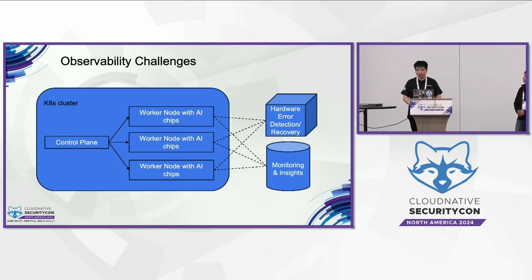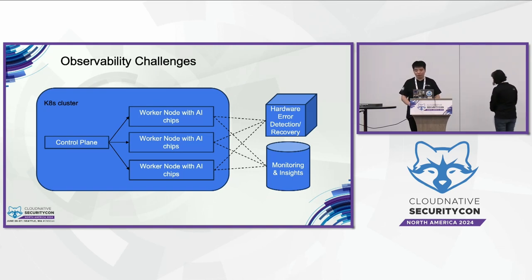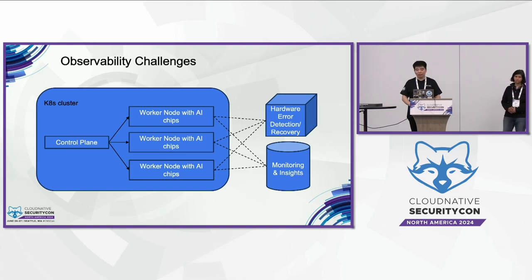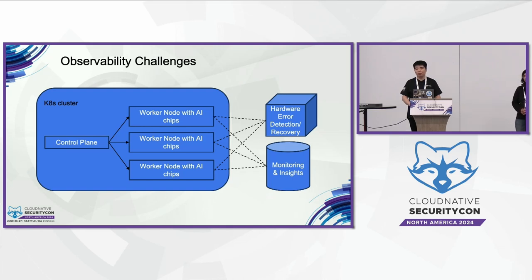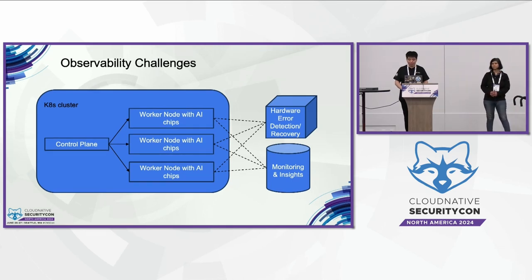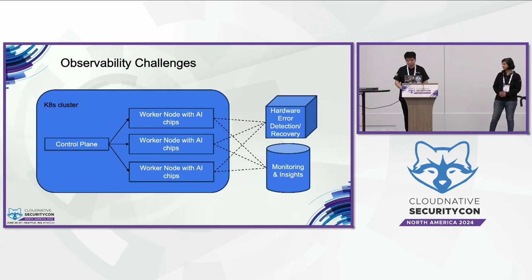Notably, when running machine learning workloads in a large cluster, even if only one node has issues, the whole machine learning workload can be impacted. And the second class is the need for additional monitoring of AI chips on top of existing Kubernetes regular monitoring.